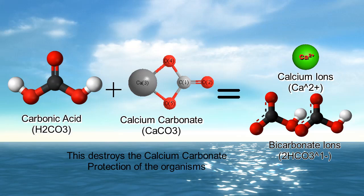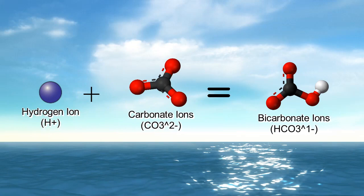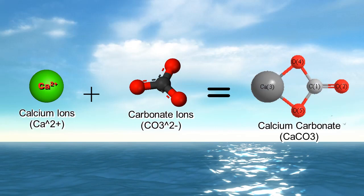The carbonic acid also breaks into hydrogen ions and bicarbonate ions. The extra hydrogen ions bond with carbonate ions in the water, making more bicarbonate ions, meaning the animals in the water have less carbonate to make calcium carbonate, meaning it will take longer to make their shells.